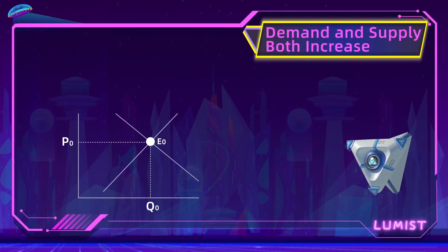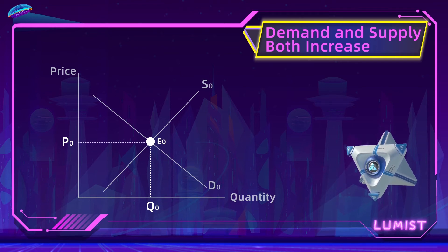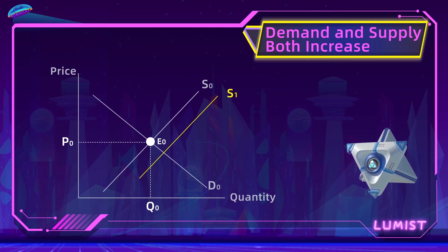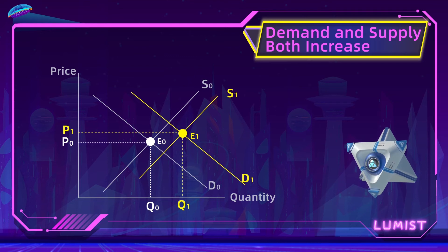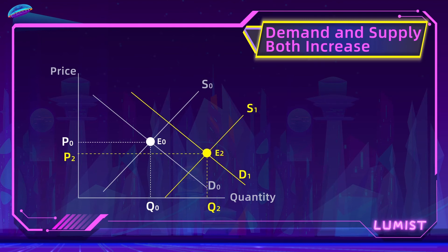Now we've seen how shifts in either demand or supply change the market equilibrium. Let's move on to more complicated cases where we shift both at the same time. Assume that demand and supply are both increasing — maybe there are more buyers and sellers in the market simultaneously. Supply shifts right to S1 and demand shifts right to D1, creating a new equilibrium at E1. Price may increase a little and quantity increases a lot, but if supply shifts even further right, price can actually go down while quantity is still much higher.